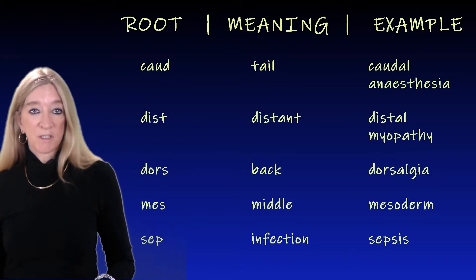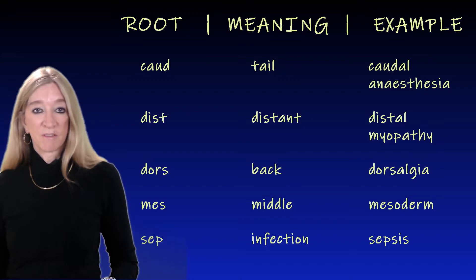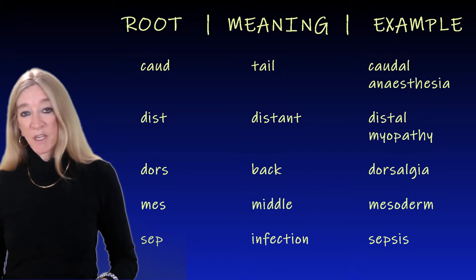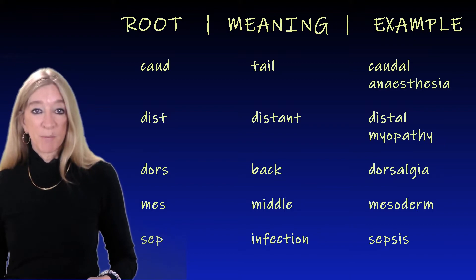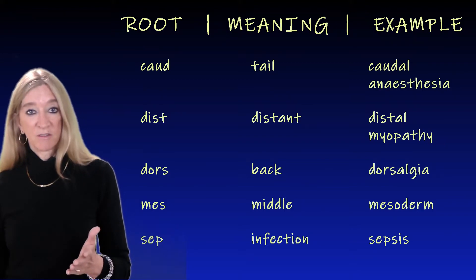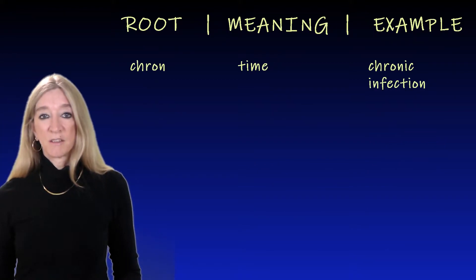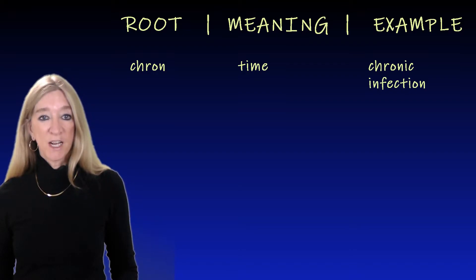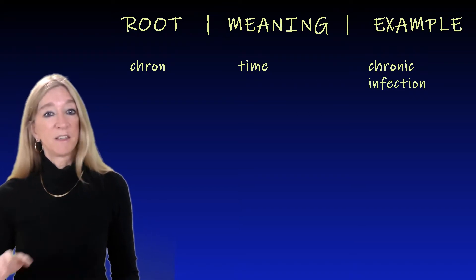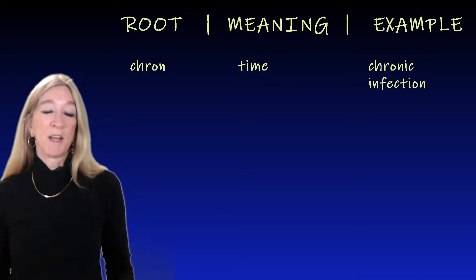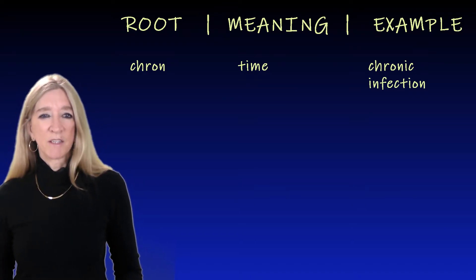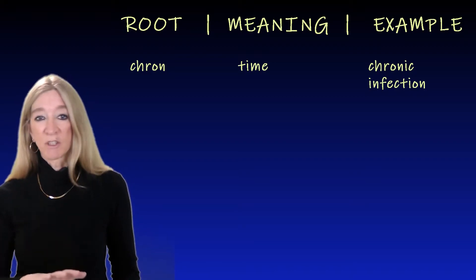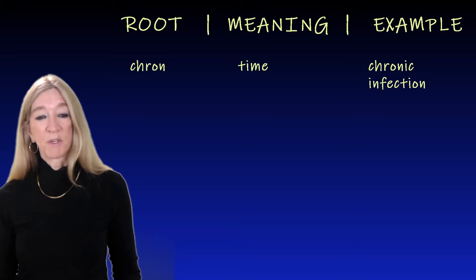The next root, 'sep,' meaning infection. An example is sepsis. We also have the example of antiseptic, against infection. The next root is 'chron,' meaning time. An example is chronic infection, meaning an infection that persists over time. This is the same 'chron' as in words like synchronize, same time — when you synchronize your schedule or your watch with someone else, you are getting on the same time.